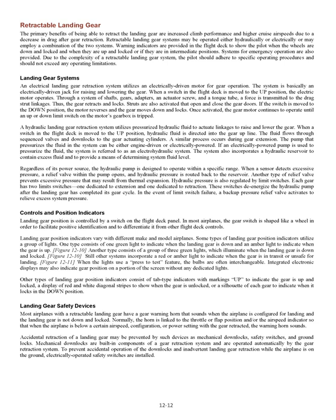Controls and Position Indicators. Landing gear position is controlled by a switch on the flight deck panel, which in most airplanes is shaped like a wheel to facilitate positive identification and differentiate it from other controls. Some types of indicators use a group of lights: one type consists of a green light indicating gear down and an amber light indicating gear up; another type uses three green lights that illuminate when the gear is down and locked. Still other systems incorporate a red or amber light to indicate when the gear is in transit or unsafe for landing. Integrated electronic displays may also indicate gear position on a portion of the screen. Tab-type indicators may show markings for gear up and locked, diagonal stripes to show when the gear is unlocked, or a silhouette of each gear when it locks in the down position.